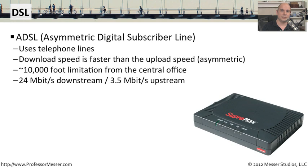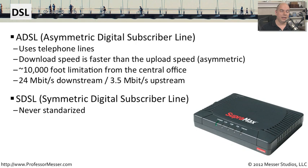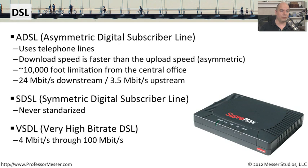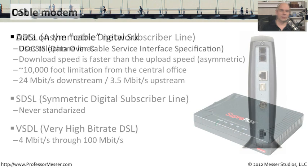A type of DSL that never caught on was Symmetric DSL, or SDSL, which offered the same speeds upstream as downstream. Although that makes perfect sense when you need that level of bandwidth sending traffic out, it's not a standard that really caught on. Instead, the standard that has moved forward is VDSL — Very High Bit Rate DSL — which can provide throughput speeds anywhere from 4 megabits per second all the way up to 100 megabits per second.